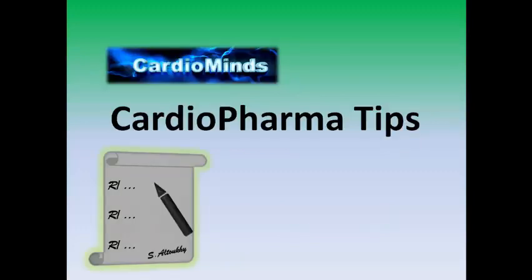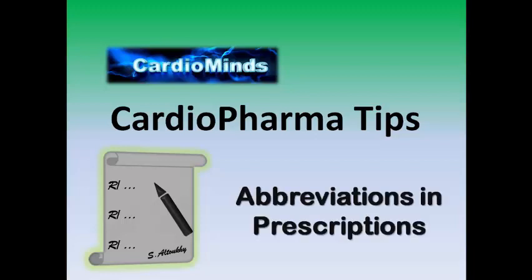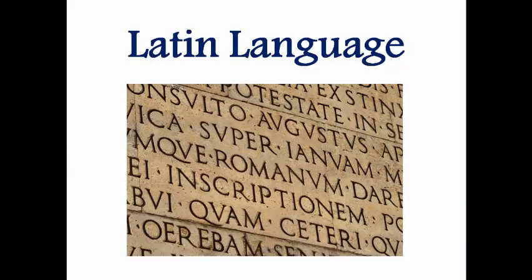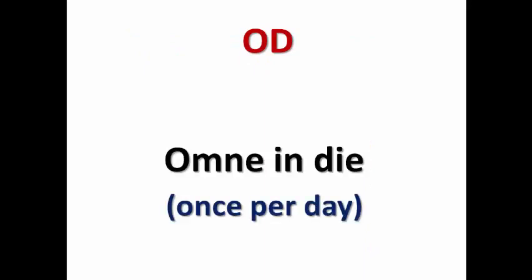Today we are starting with the topic of abbreviations that we commonly use in our prescriptions. Most of the terminologies we use to describe diseases in clinical practice are derived from Latin, and so the abbreviations in our prescriptions are also derived from Latin. The most famous one is OD — a Latin term for 'omni die' — which means once per day. We use it in the prescription to describe that this medication should be taken only once per day.